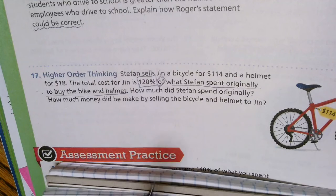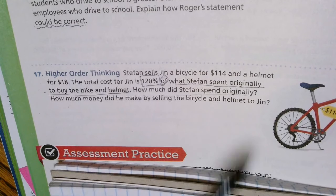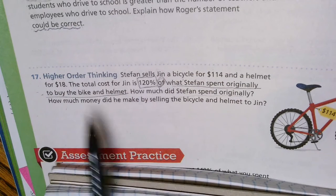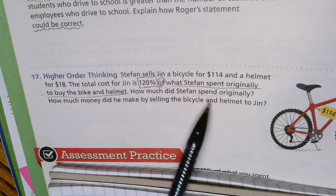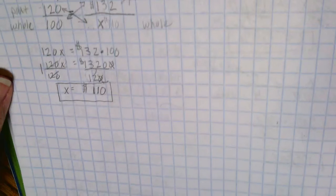The second question: I just found out Stefan spent $110 originally. How much money did he make by selling the bicycle and helmet to Jin? Well that's called your profit.